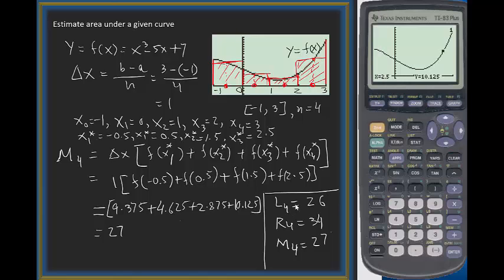We are done. Left-hand approximation gives us 26 square units, right point gives you 34 square units, and midpoint gives us 27 square units. We are done with the estimation.